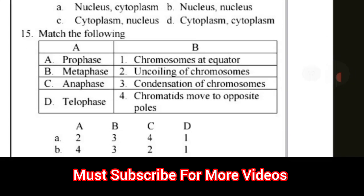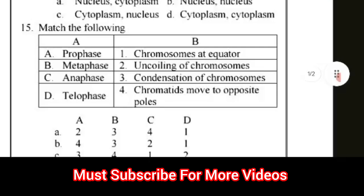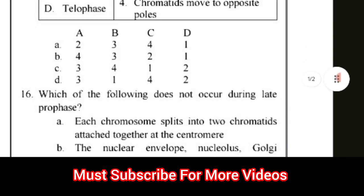Question number 15: Match the following — prophase, metaphase, anaphase, telophase — with: chromosomes at equator, uncoiling of chromosomes, condensation of chromosomes, chromatids move to opposite poles. The correct answer for question number 15 is option D.